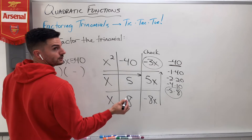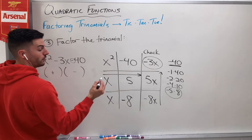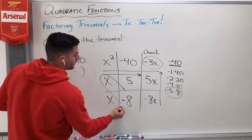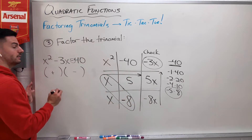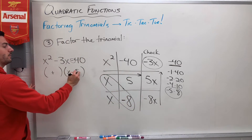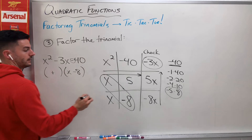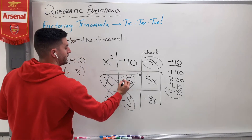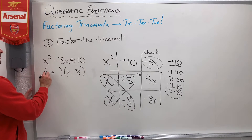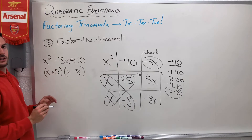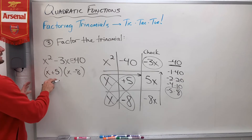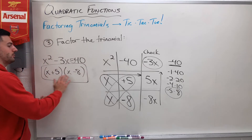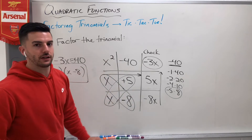That means I got my two pairs — the ones across the diagonals. So it would be x and negative 8, or x minus 8 — that goes in my minus group. And then x and positive 5, or x plus 5 — that goes in my first group. So x plus 5, x minus 8. There's example one for you, all worked out. Let's do a couple more.